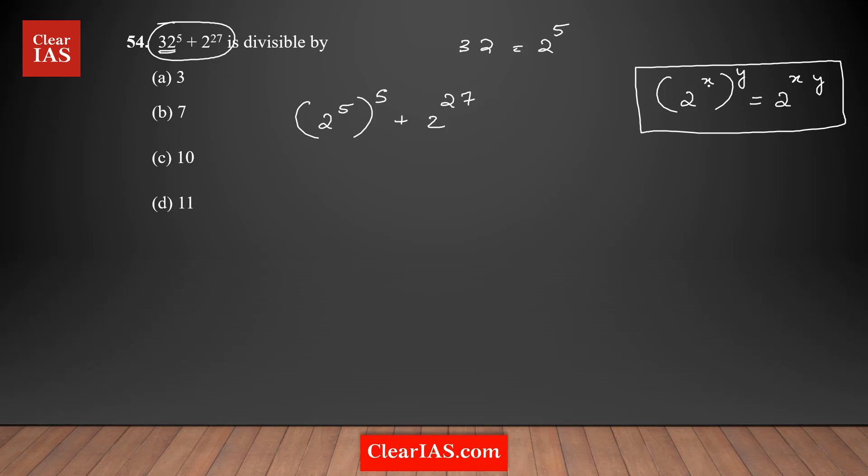So when you have a situation like this, you need to multiply these powers. I'm going to apply it here. The first term equals 2^(5×5), which is 2^25 + 2^27.